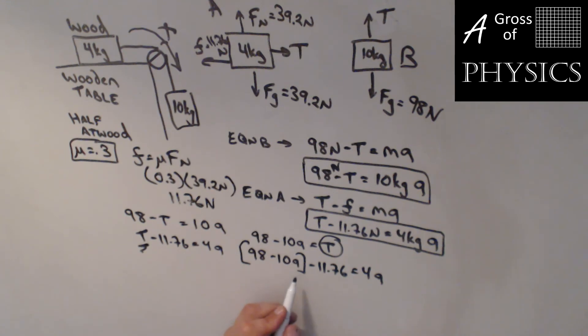It looks like we only have one unknown, which is A. I'll add the 10 onto the other side, so I'll get 14A over here. Then I'll combine the 98 minus 11.76, and I have 86.24 = 14A. Divided by 14, I get 6.16 for the acceleration.